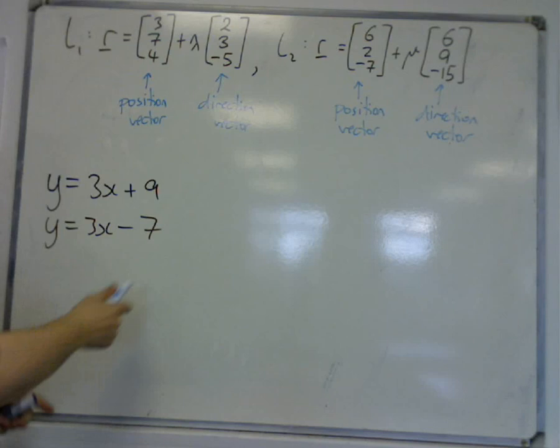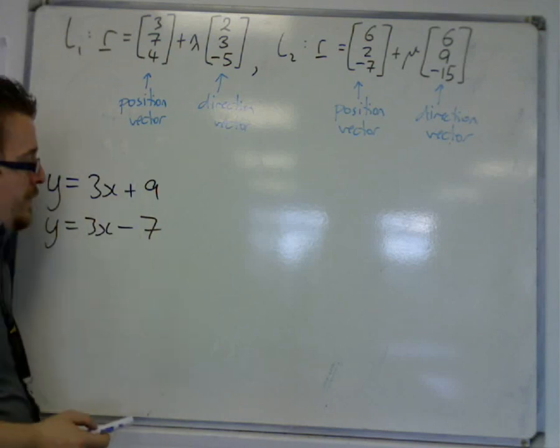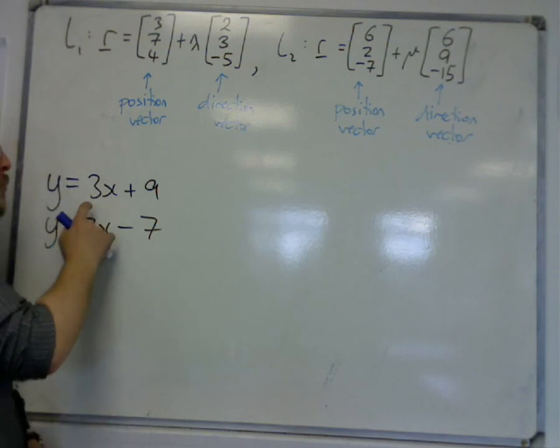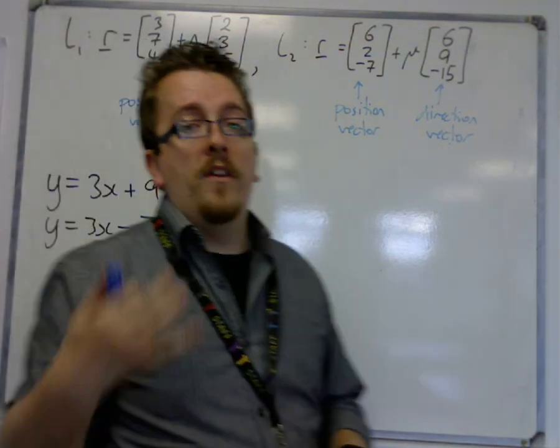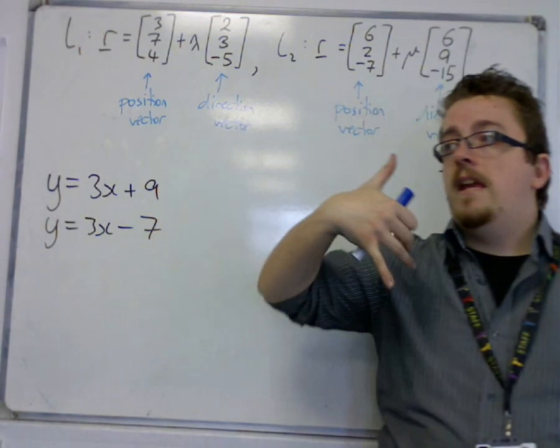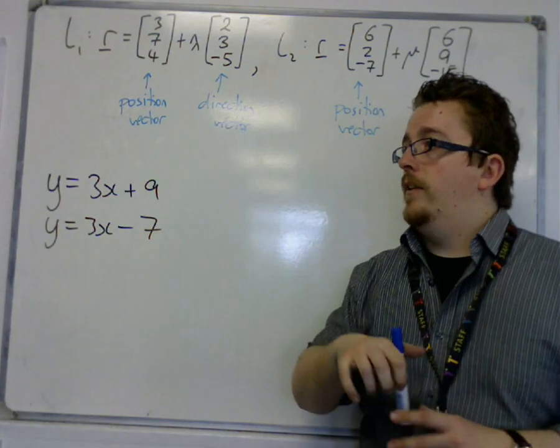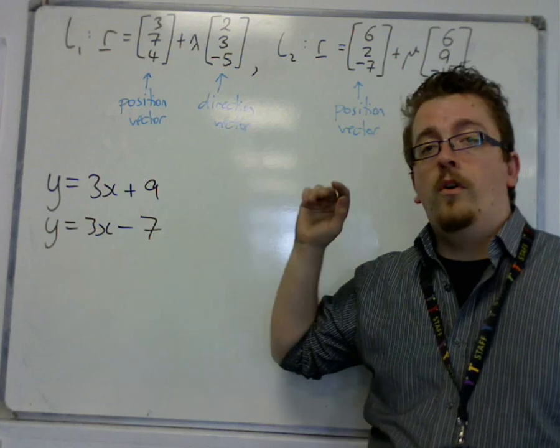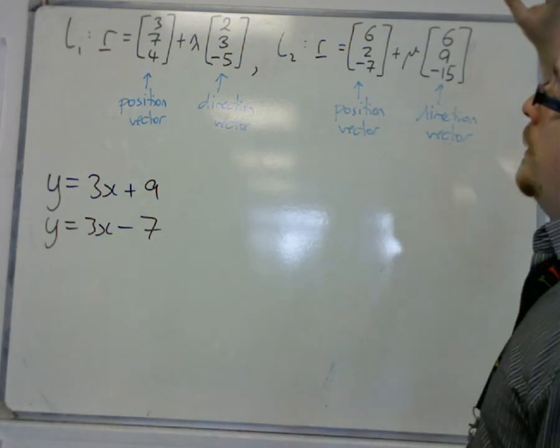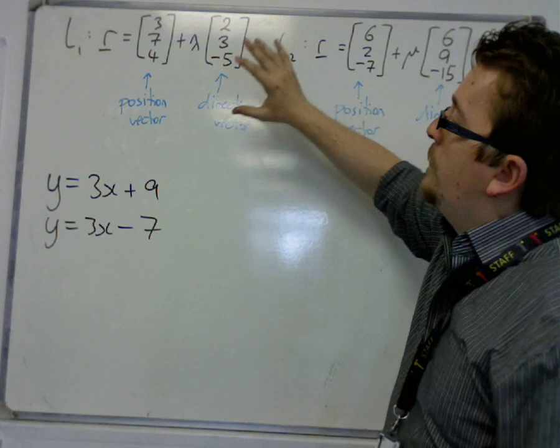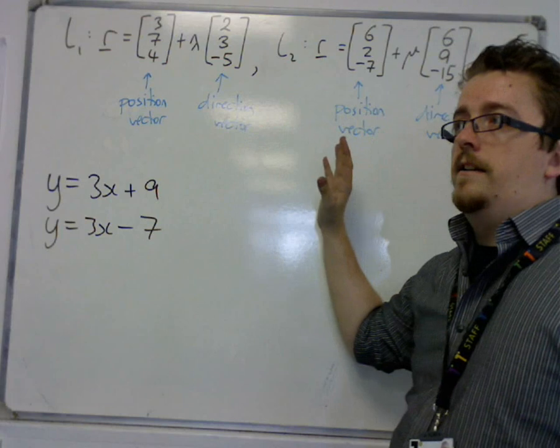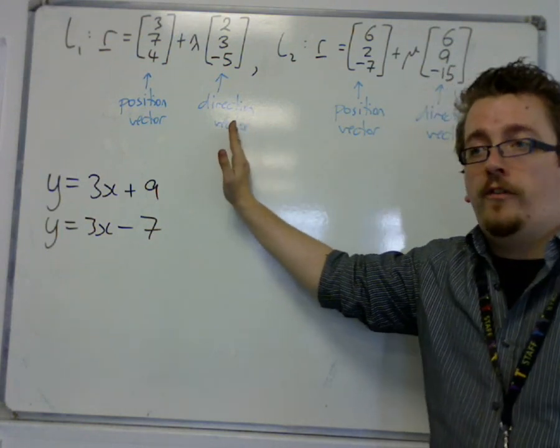Now, in both of these cases, we identified that both of the lines are parallel because we're looking at the gradient. And it doesn't matter what number I put here to say what number the line goes through the y-axis. What matters is the gradient or the direction, rather. So in these cases, the position of the line and the position vector does not matter. It is the direction vector that is of interest to us.